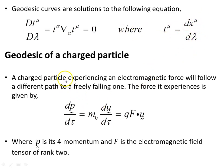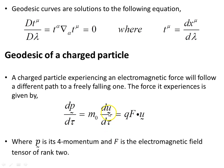Now let's look at the geodesic of a charged particle experiencing an electromagnetic force, which follows a different path to a freely falling one. The force it experiences is given by the time rate of change of momentum with respect to proper time: m₀ times the rate of change of the four-velocity u with respect to tau equals q, the charge, times the electromagnetic tensor f dotted with the four-velocity.